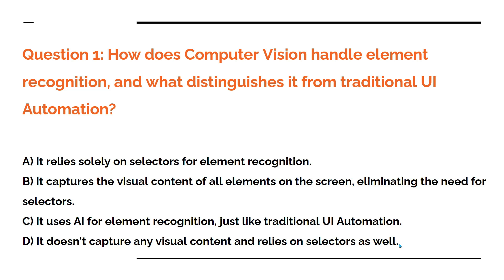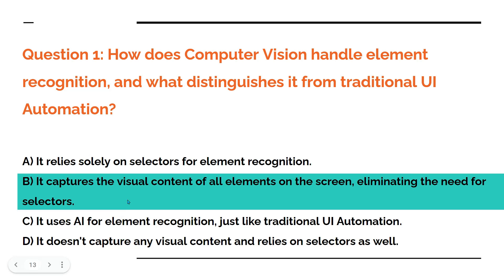Now comment your answer — do not worry if you are going wrong, just comment your answer for question number one. The answer is B: it captures the visual content of all elements. The very first time when we do a CV screen scope, it will capture all the elements that are visually present, eliminating the need for selectors. This is the appropriate answer.